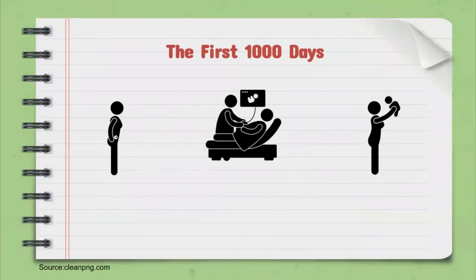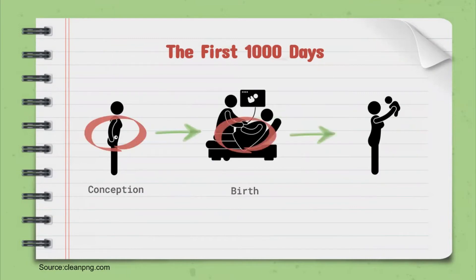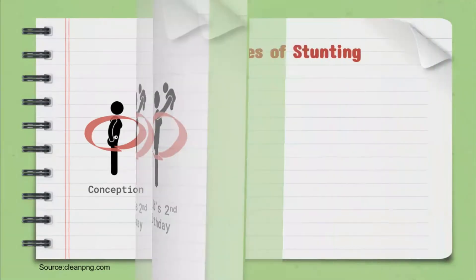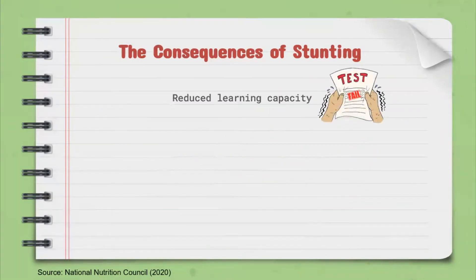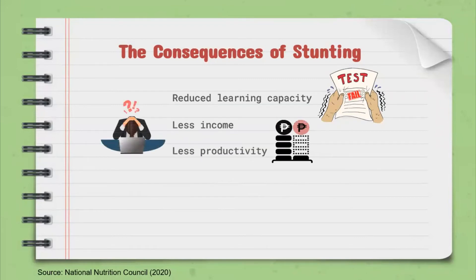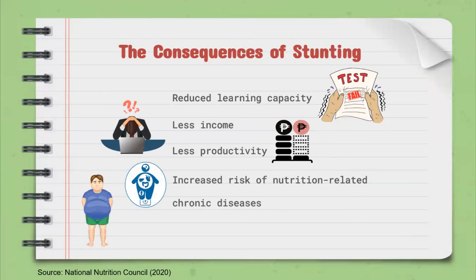Scientific evidence has shown that stunting in early life, especially in the child's first 1,000 days — from conception until the age of two — has negative consequences for the child's physical and mental development. Stunted children are faced with multiple risks that affect their overall quality of life. These include poor cognition or reduced learning capacity and educational performance, which in turn results in low adult wages, less income, less productivity, and when accompanied by excessive weight gain later on in childhood, an increased risk of nutrition-related chronic diseases in adult life. All of this also affects one's emotional stability and overall morale.